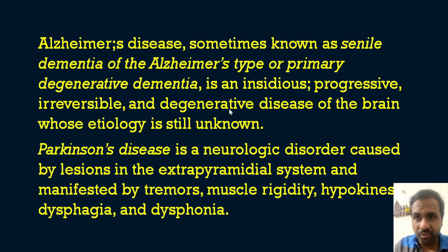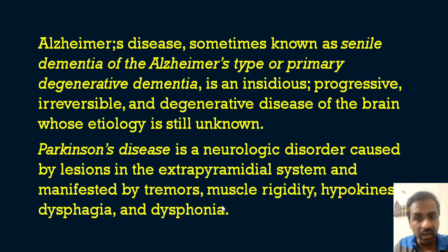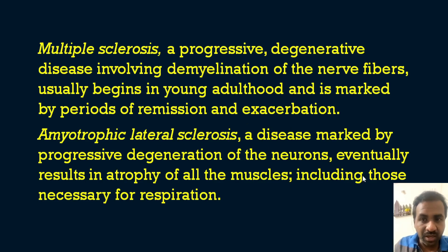Parkinson's disease is a neurological disorder caused by lesions in the extrapyramidal system, manifested by tremors, muscle rigidity, hypokinesia, dysphagia, and dysphonia. Multiple sclerosis is a progressive degenerative disease involving demyelination of nerve fibers, usually beginning in young adulthood, marked by periods of remission and exacerbation. Amyotrophic lateral sclerosis is a disease marked by progressive degeneration of neurons, eventually resulting in atrophy of all muscles including those necessary for respiration.